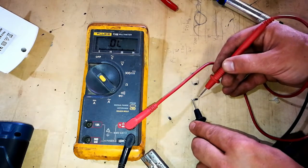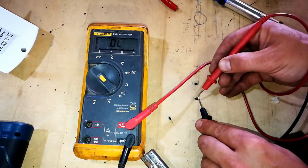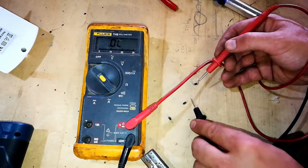Let's check this one. Negative. Positive. Goes through. Change it over. Goes through. That diode is damaged.